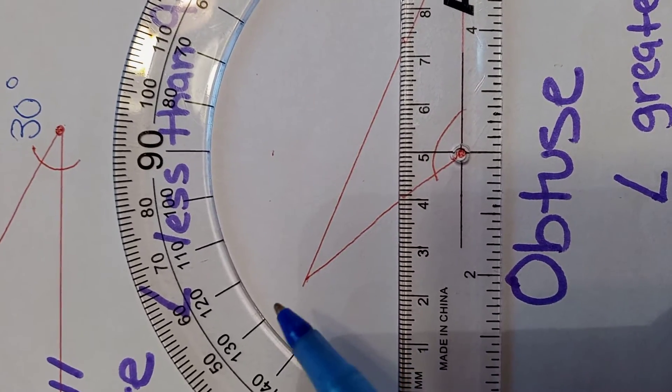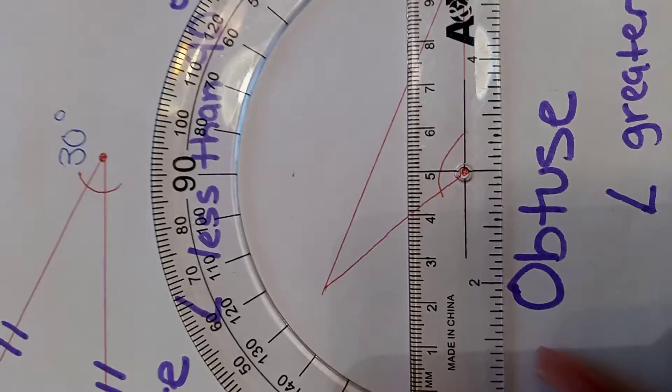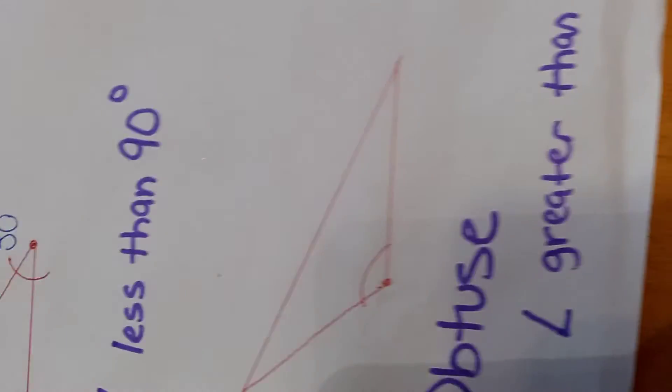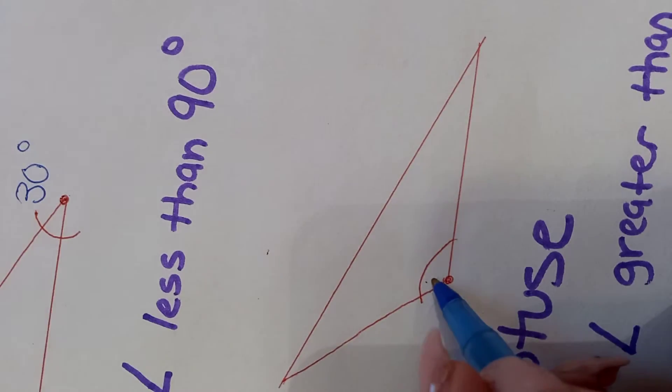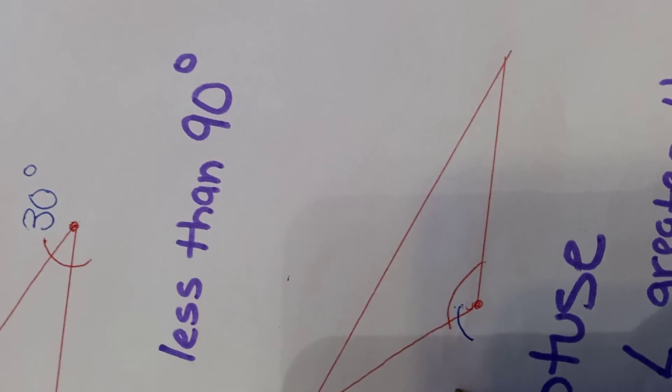The angle right here is 130 degrees, which makes it an obtuse triangle. So the angle for here is 130 degrees.